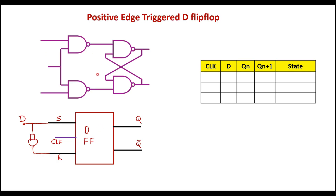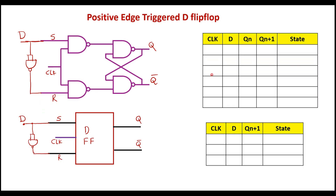Here in the circuit diagram, this is the S input, this is R input, this is the clock input, this is Q, and this is Q bar. I will pass S through an inverter implemented using a NAND gate. The output of this is connected to R. The input here is nothing but D.